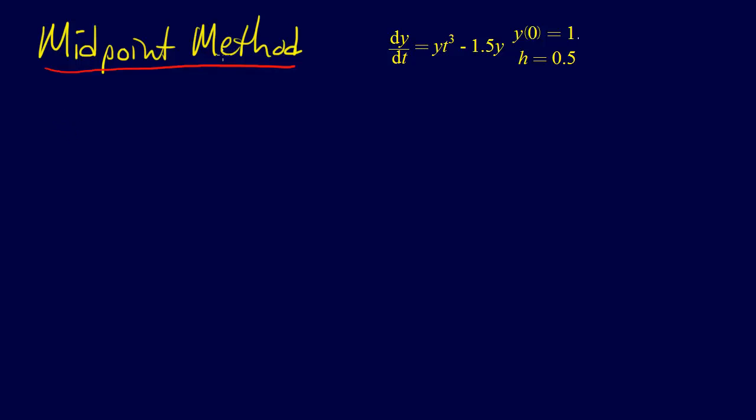We're at the midpoint method, and at this point we should probably use the general Runge-Kutta formula for the second order Runge-Kutta methods, which the midpoint method is, Heun's method is, and so is Ralston's method, which is what we're going to do next.